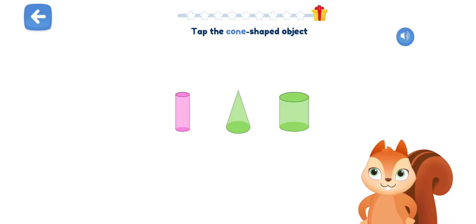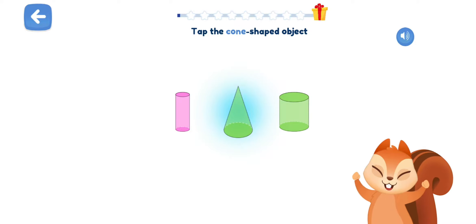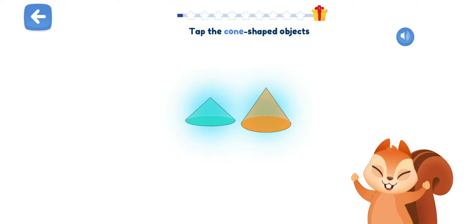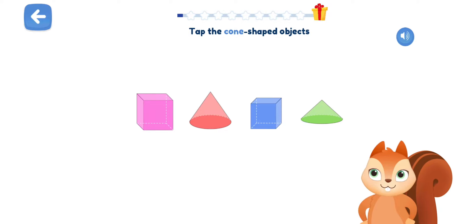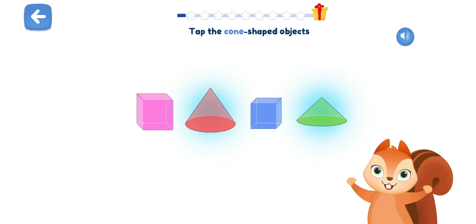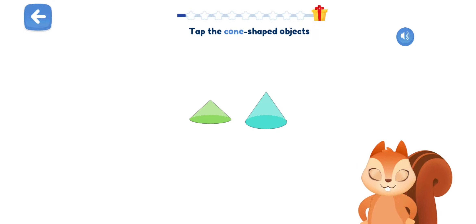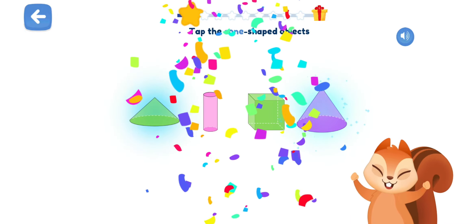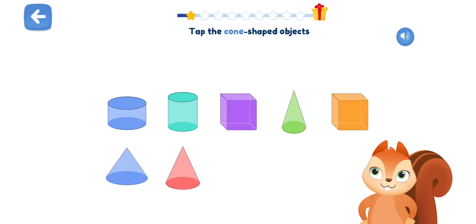Tap the cone-shaped object. Marvellous! Tap the cone-shaped objects. Cool! Tap the cone-shaped objects. Cool! Tap the cone-shaped objects. Well done! Tap the cone-shaped objects. You're doing great! Tap the cone-shaped objects.